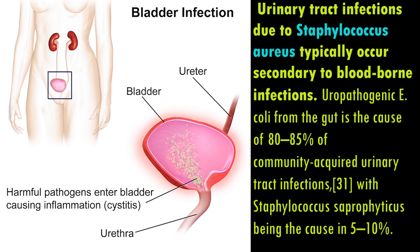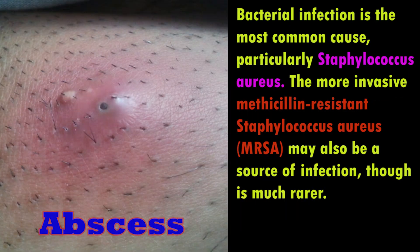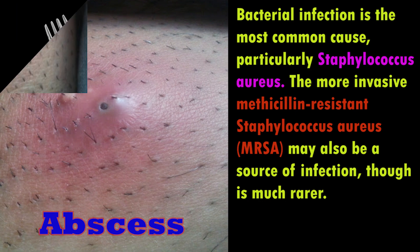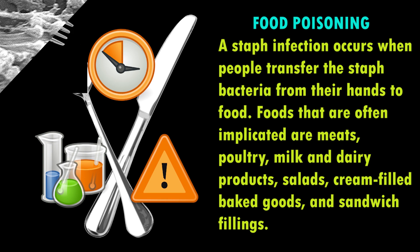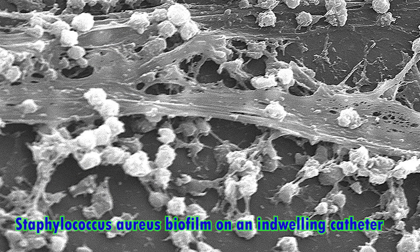Staphylococcus aureus, Escherichia coli, and coagulase negative Staphylococcus are commonly found in blood samples. The common agents of IV catheter-associated bacteremia are Staphylococcus epidermidis, other coagulase negative Staph, and Staph aureus.